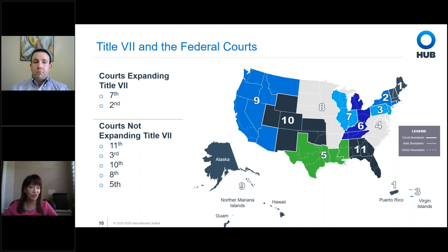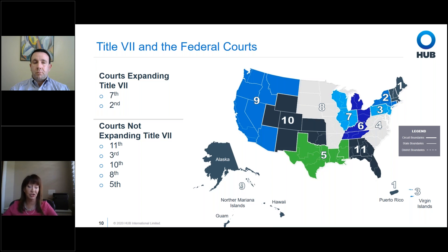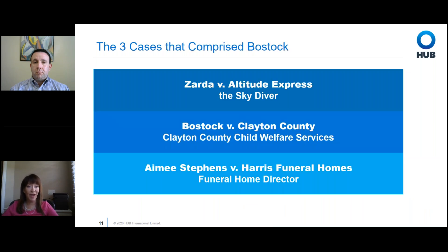Federal courts have really struggled with this. Different jurisdictions have had different holdings on litigation. The 11th Circuit, covering the Southeast United States, historically held that transgender status and sexual orientation are not protected under Title VII — which is why we needed an answer from the Supreme Court. Depending on where you sit in the country, your courts may or may not have deemed these protected classes, so the Supreme Court's decision is so significant.